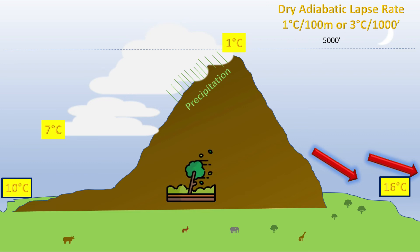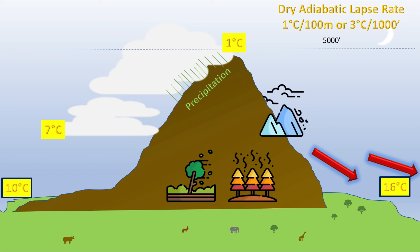Foehn winds can be very strong, causing structural damage. The hot, dry Santa Ana winds in California are known to promote wildfires. In springtime in the Alps, the sudden rise in temperatures linked to foehn winds can lead to rapid melting of snow and avalanches.